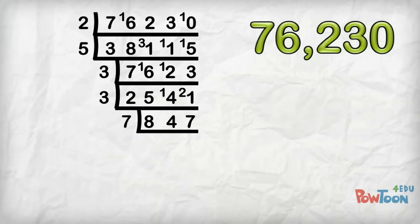So using short division, 7's into 8, 1, remainder 1. 7's into 14, 2. 7's are 14. 7's into 7, 1.